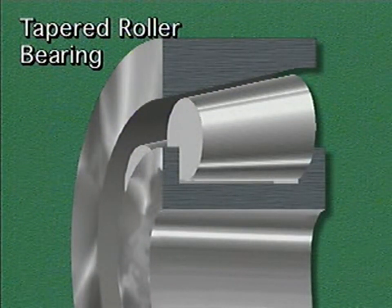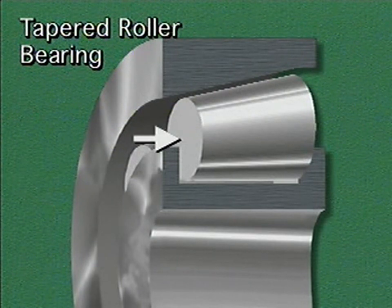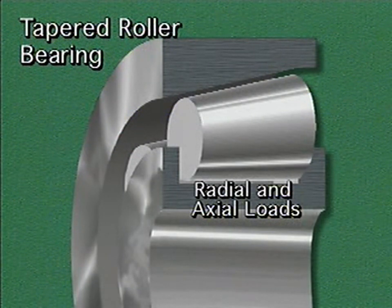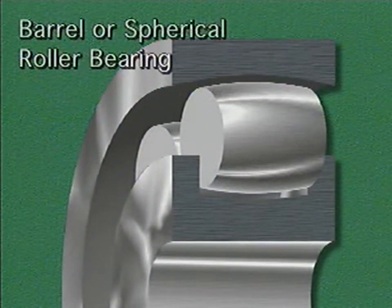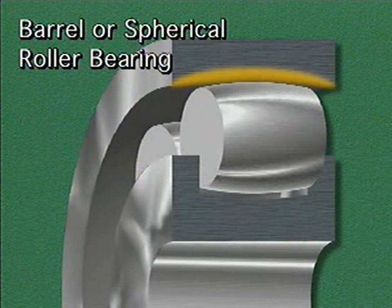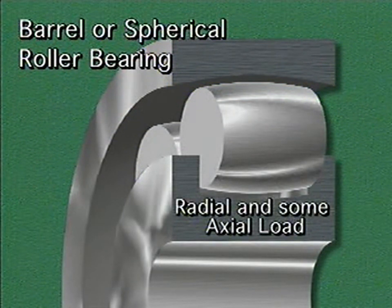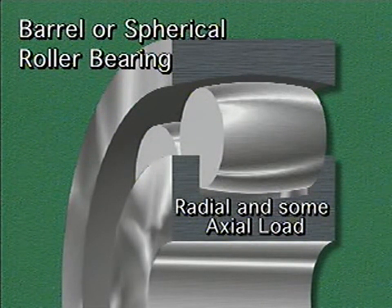Another type of roller bearing is a tapered roller bearing. In tapered roller bearings, the rollers are smaller at one end than at the other, and the rings are tapered to match the rollers. Tapered roller bearings can support both radial loads and axial loads. Barrel or spherical roller bearings are self-aligning bearings. The outer ring is shaped like part of a sphere, which allows the bearing to align itself. Barrel roller bearings are designed to handle primarily radial loads, but they can also handle some axial loads.